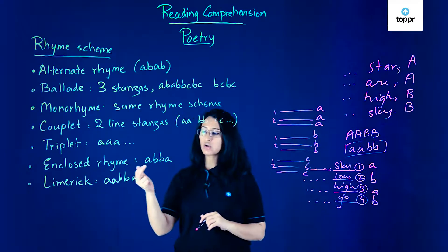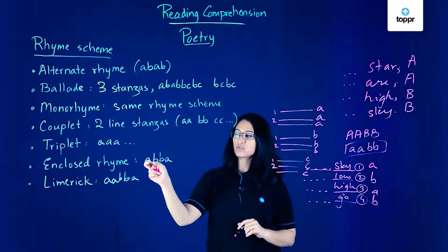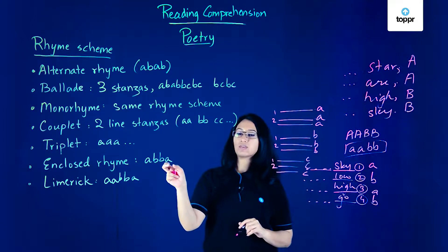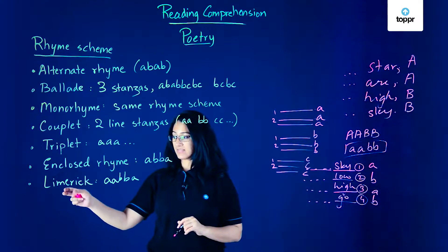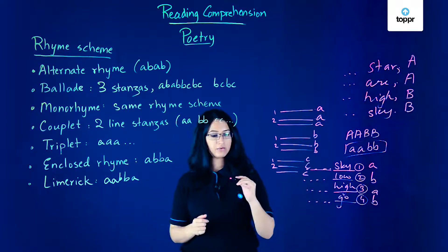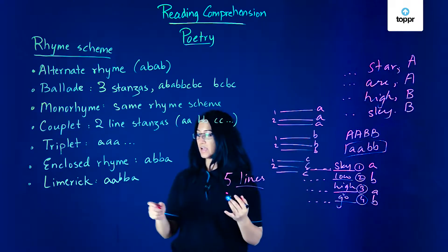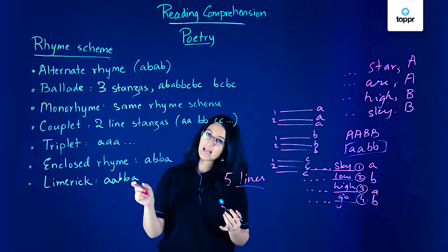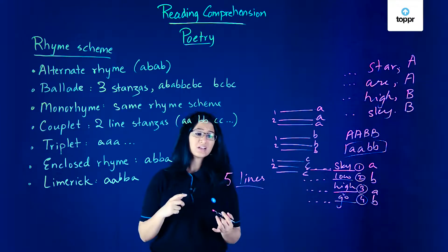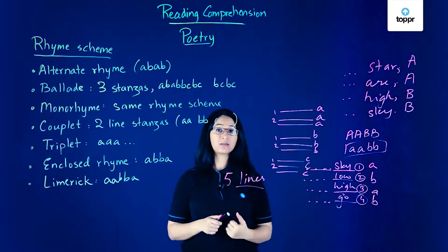A closed rhyme has the scheme ABBA — the first and fourth lines rhyme, and the second and third lines rhyme. Then we have the limerick, which we already saw: it has five lines per stanza with a rhyme scheme of AABBA. The first two lines and the last line rhyme, while the third and fourth lines rhyme with each other.